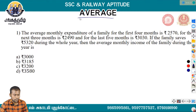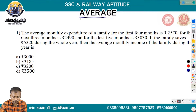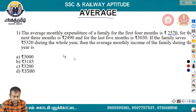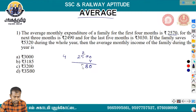The average monthly expenditure of a family for the first 4 months is 2570. If the average is 2570, the total is 2570 into 4, which equals 10,280. This is for 4 months.